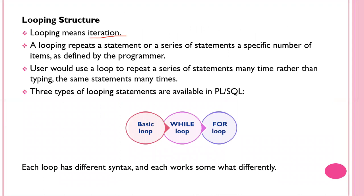Looping means iteration — a loop repeats a statement or a series of statements a specific number of times as defined by the programmer. You use a loop to repeat a series of statements many times rather than typing the same statements repeatedly. There are three types of looping statements available in PL/SQL: the basic loop, the while loop, and the for loop.